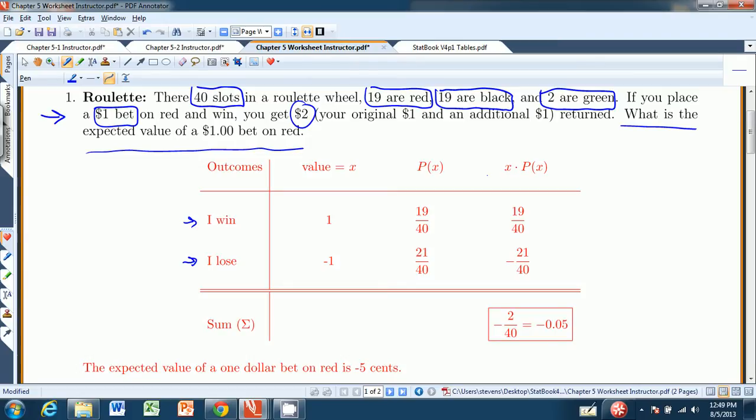And so the question is, what is the expected value of a $1 bet on red? So there's two outcomes: I can win or I can lose. That's red or not red. And if I do win, it's a net positive of $1. They give me two, but I put one down, so one of them is already mine. If I lose, they keep my dollar, so it's a value of negative one.